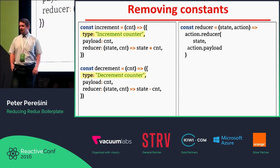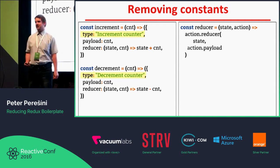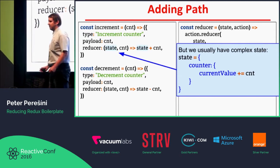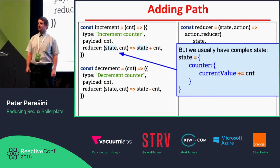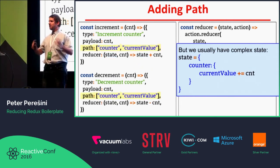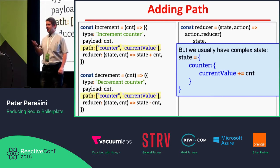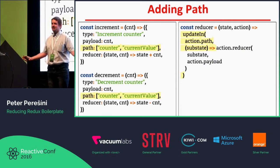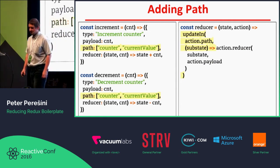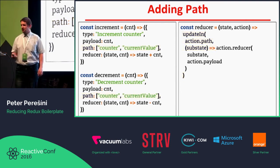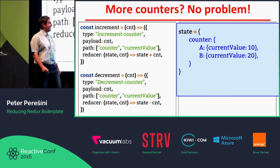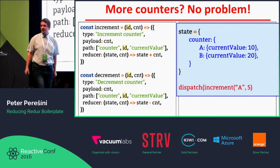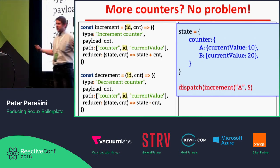Now I remove the constants. Usually when I want to reduce something, I don't want to reduce it at the root state — I want to reduce it somewhere down in some substate. I can attach a path to the actions, and then change my reducer to use a function which can update deep in the state according to the reducer. This is quite cool because if I have more counters I can store them in two parts of the state, A and B, and simply route my actions according to an ID by just changing the path.